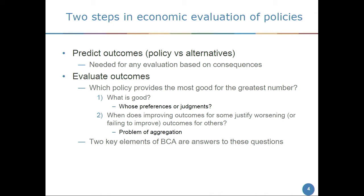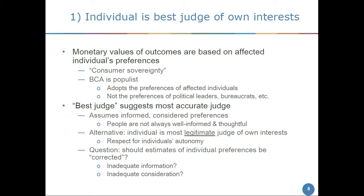The second critical question is the interpersonal comparison problem — when is it justified to adopt a policy that does good for some people at the cost of harming others or foregoing benefits to others? The two key elements of BCA are answers to these two questions. On the first, BCA rests on the idea that the individual affected is the best judge of his or her own interests, so monetary values of outcomes are based on individual preference — what's often called consumer sovereignty. Benefit-cost analysis is at its heart populist; it rests on the preferences of the affected people, not the preferences of some decision maker or bureaucrat.